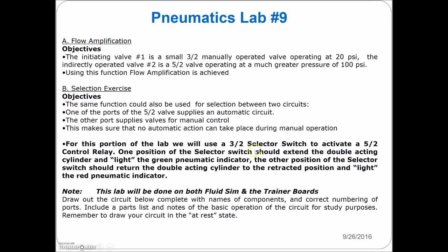For this portion of the lab, one position of the selector switch should extend the double acting cylinder and the light green pneumatic indicator should come out. The other position of the selector switch should return the double acting cylinder to the retracted position, and the red indicator is going to illuminate when you're in the retracted position.